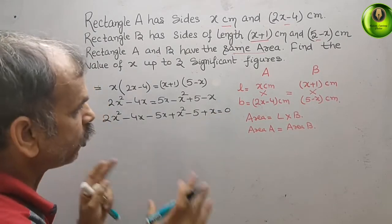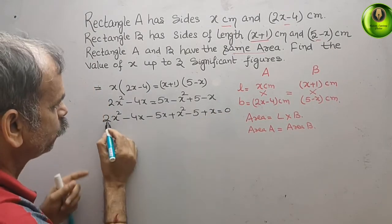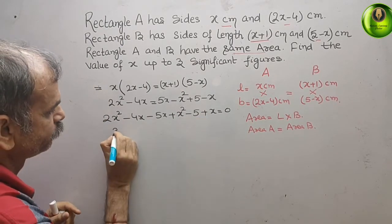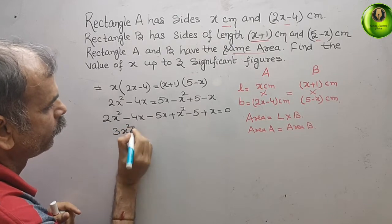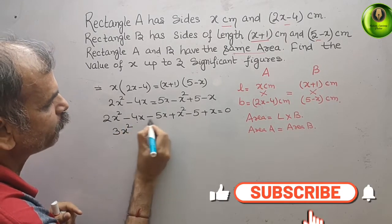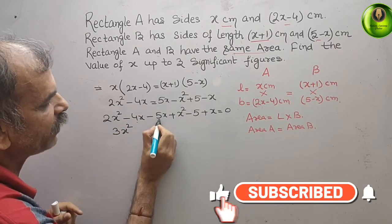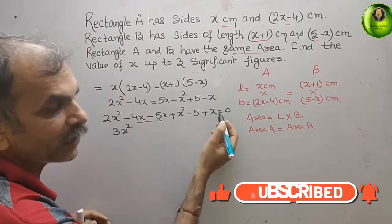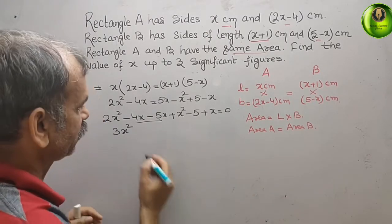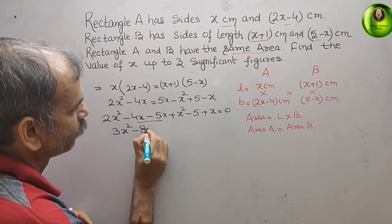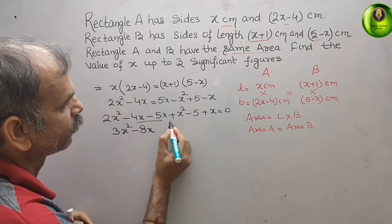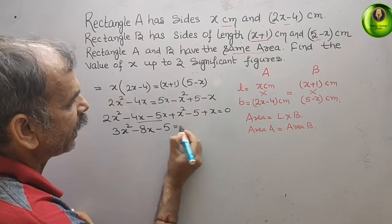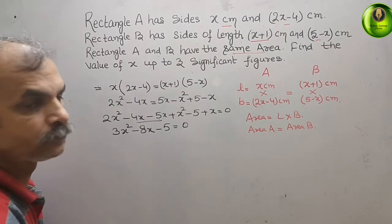Now solving this: 2x squared plus x squared is 3x squared. Minus 4x minus 5x is minus 9x, plus x gives minus 8x, and minus 5. So we have 3x squared minus 8x minus 5 equals 0.